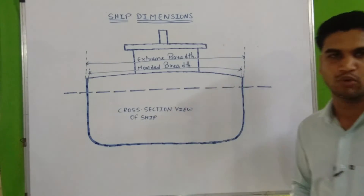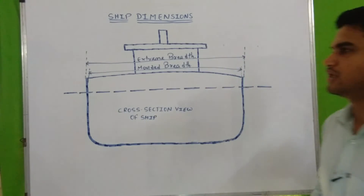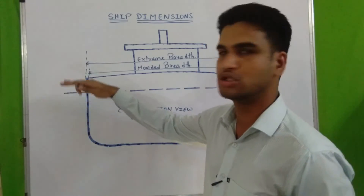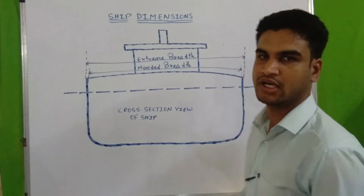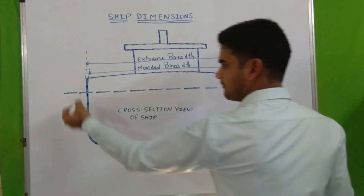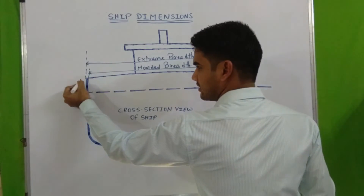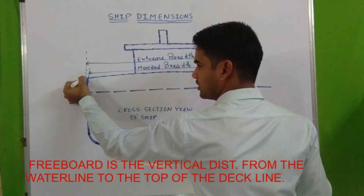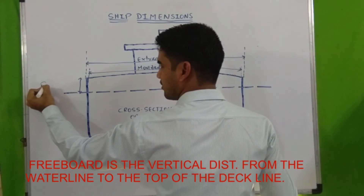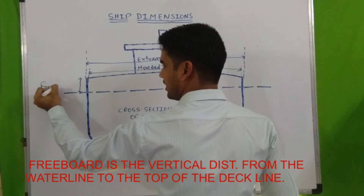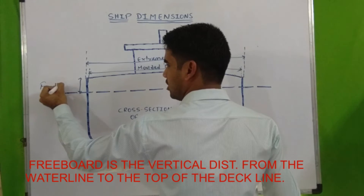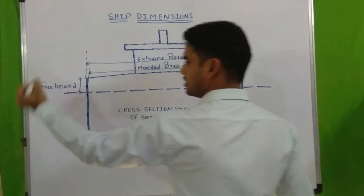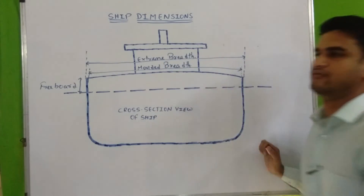Next is freeboard. Freeboard is the vertical distance from the water level to the top of the deck line. We will discuss about deck line in our load line portion.